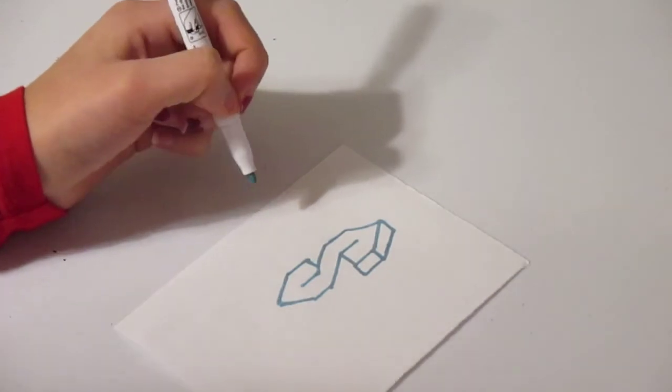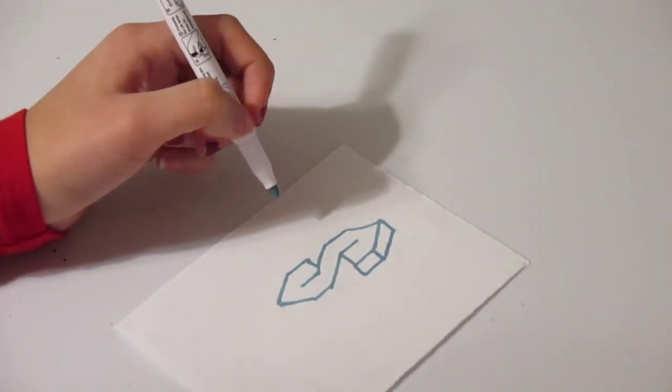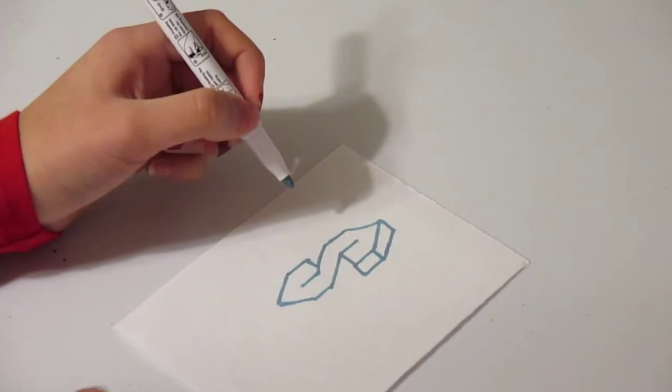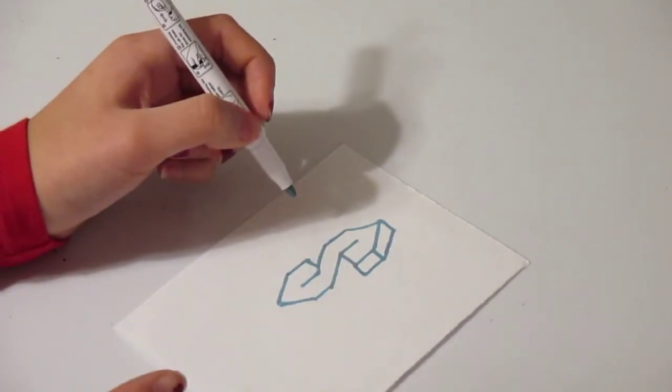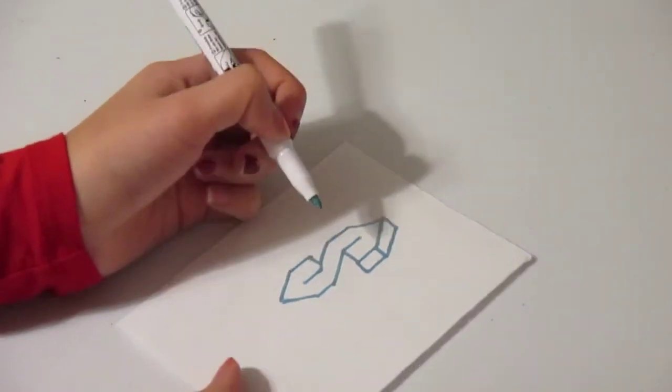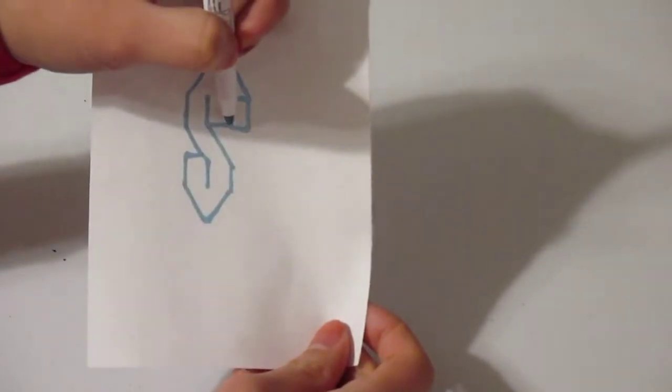As you can see we've started the 3D version but here's where it can get a little bit tricky. So you don't want to mess this up at all. So this point right here, you're going to make a line going out.